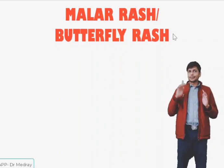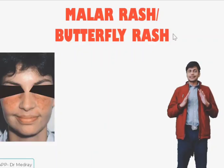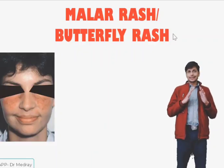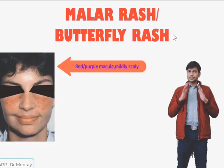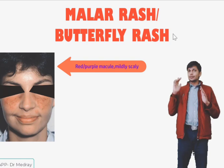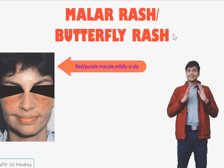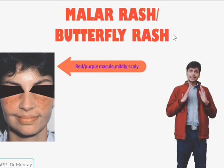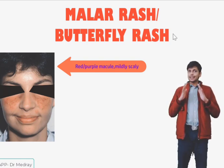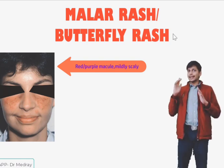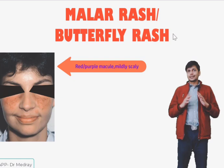What is malar rash? Malar rash is described as a red or purple rash which may be mild and scaly, seen over the bridge of the nose and the cheek.